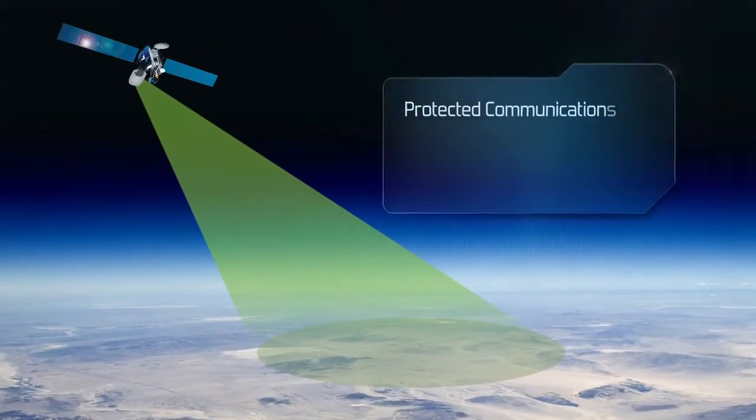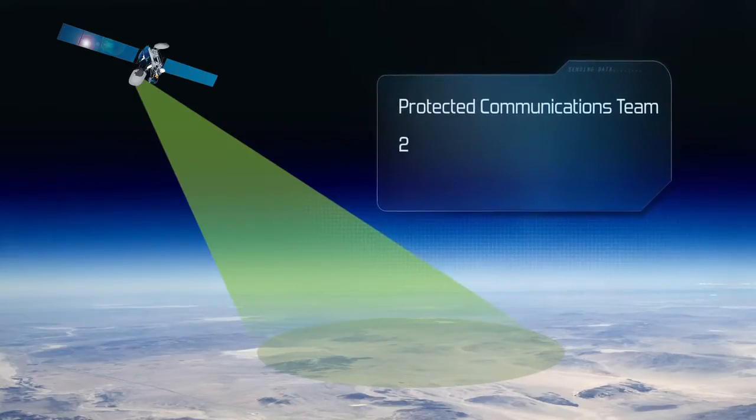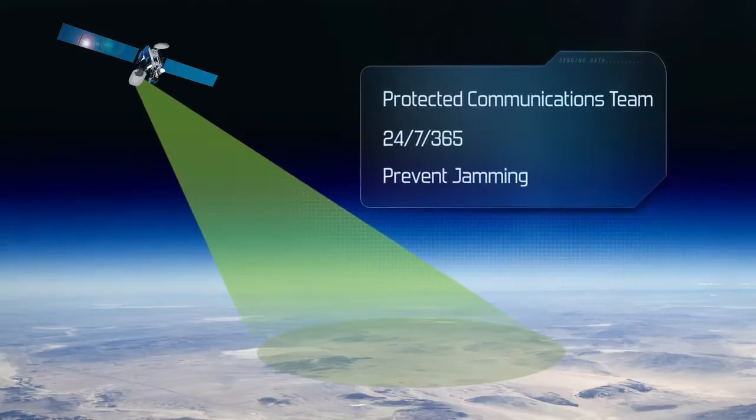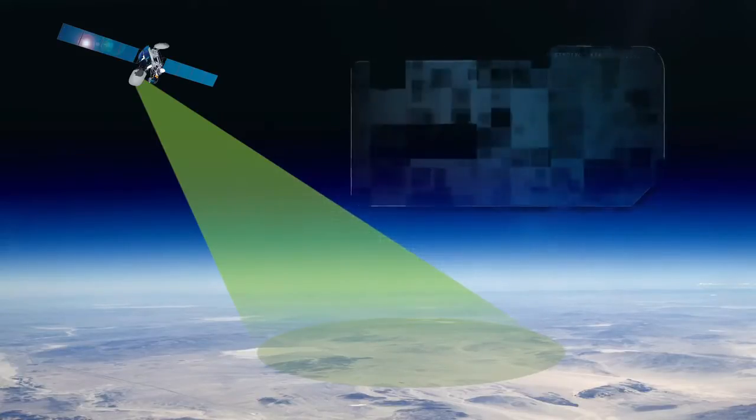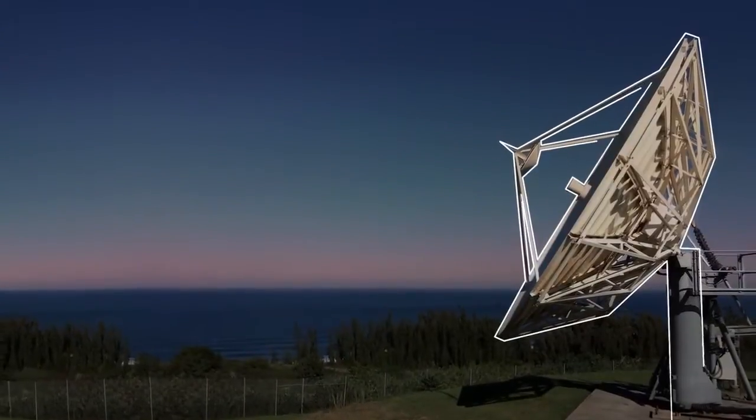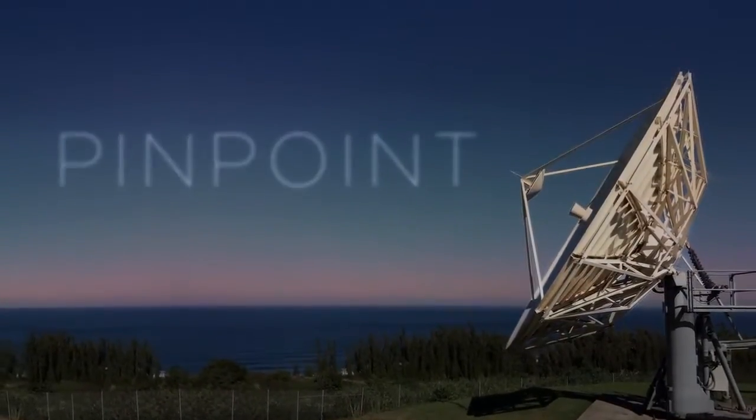Intelsat General's Protected Communications team works 24-7, 365 days a year to prevent jamming and work around it when it occurs. When they detect interference, our experts work quickly to restore operations and pinpoint the source of the disruption.